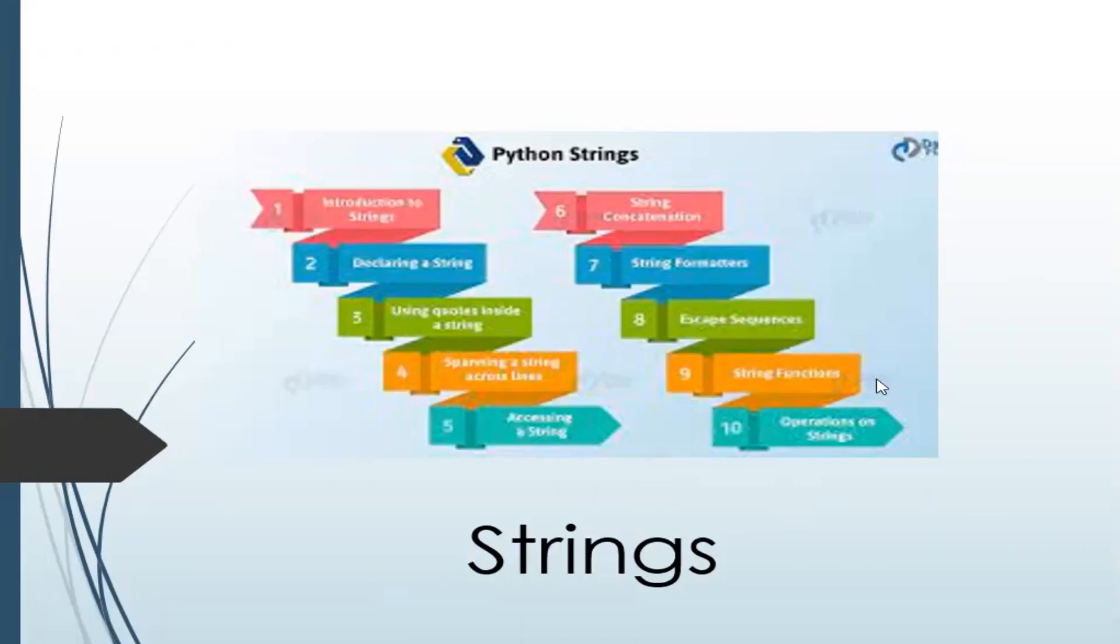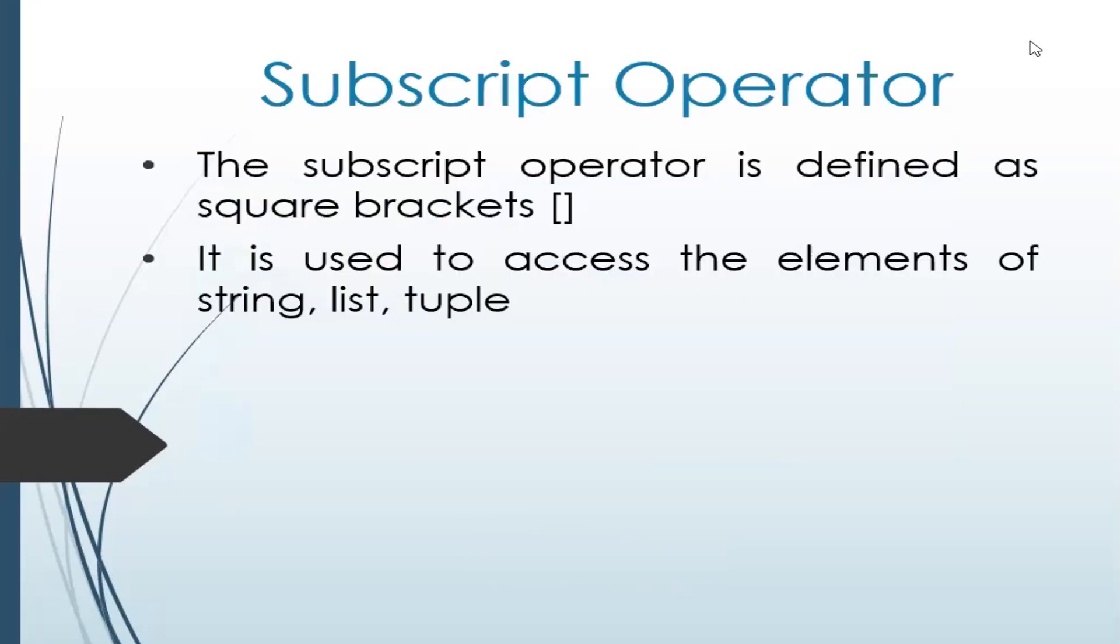Let's proceed from here. Next, subscript operator. We already know what a subscript is, so we'll just try to understand it formally. The subscript operator is defined as square brackets. We have done it for string, we have done it for list, we have done it for tuple.